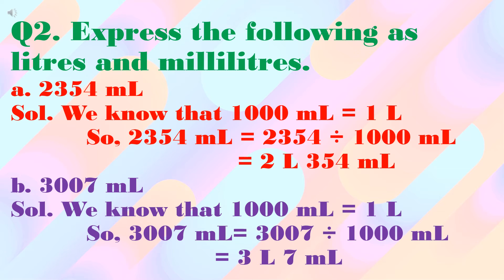Question number two is: express the following as liters and milliliters. Ab hum milliliters ko liters aur milliliters mein convert karenge. Part A is two thousand three hundred fifty-four milliliters. We know that one thousand milliliters are equal to one liter, so two thousand three hundred fifty-four milliliters will be equal to two thousand three hundred fifty-four divided by one thousand, which is equal to two liters three hundred fifty-four milliliters.